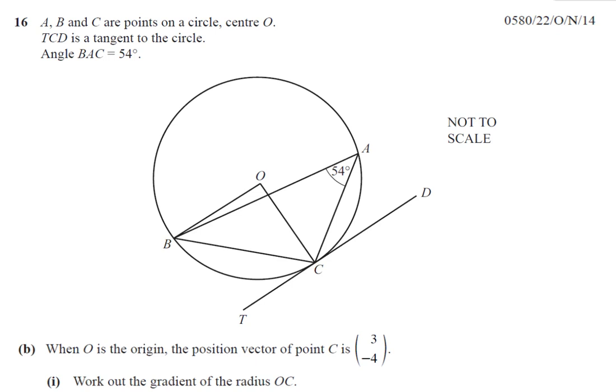I've been asked to answer question 16 part B from October-November 2014, paper 2, variant 2. In this question we have a question on angles and circles for part A, which is pretty simple. He's asked me about question part B, which is to do with gradients of lines and vectors.